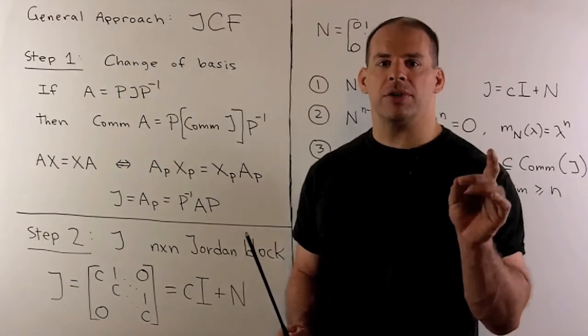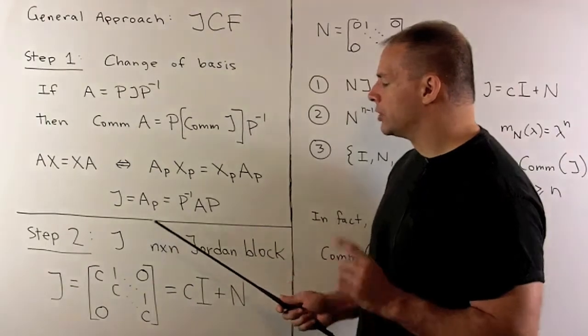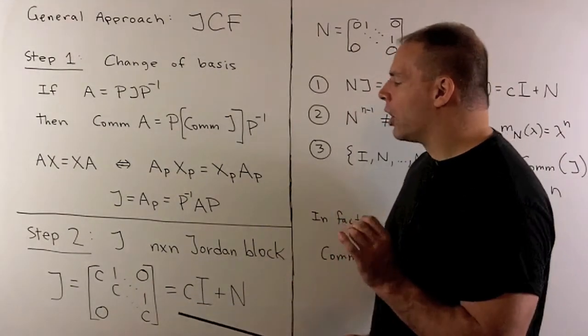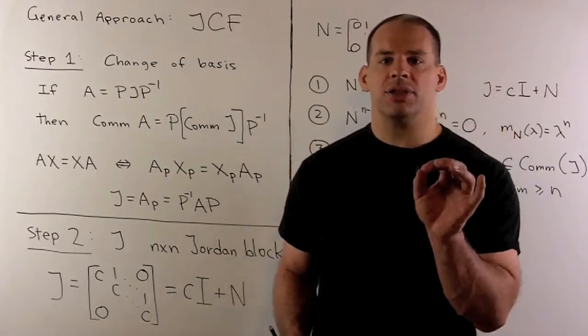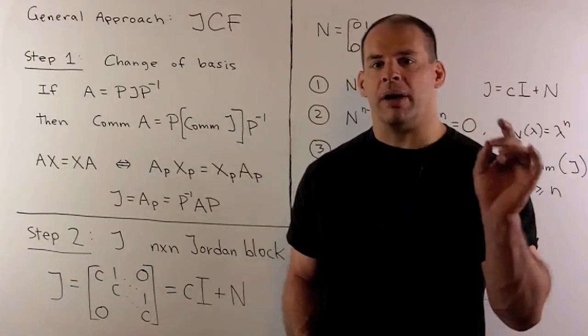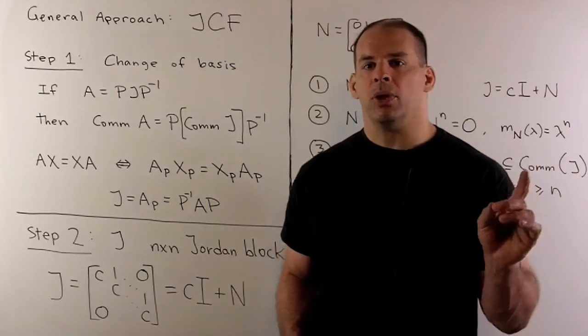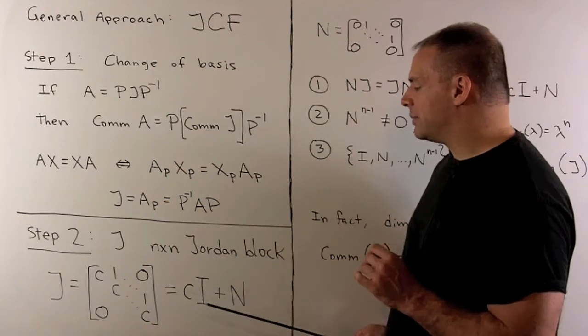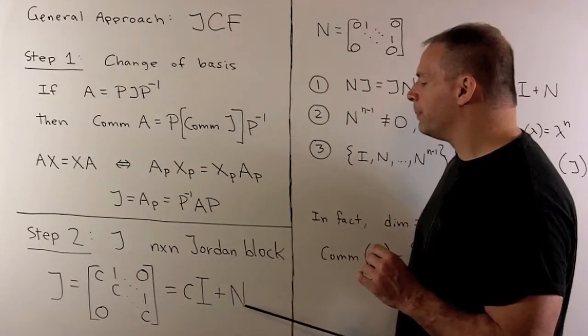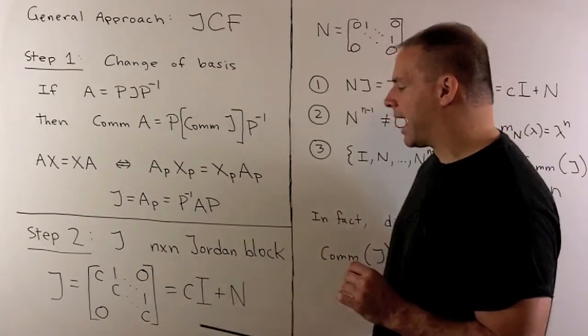Now, that puts the focus on Jordan forms. So let's consider the case where A is an N by N Jordan block J. So note here, we're going to have our eigenvalue going down the diagonal. There'll be ones on the diagonal above the main diagonal and zeros everywhere else. So we can write J as a sum of two matrices, C times the identity matrix, plus the matrix N, which is just the matrix of all zeros except for ones above the main diagonal.